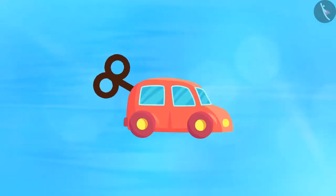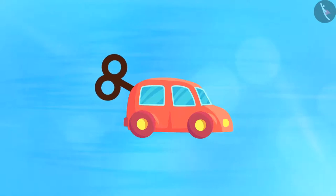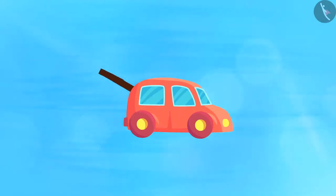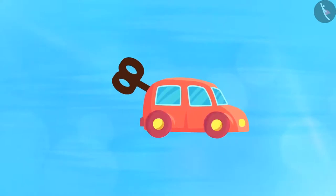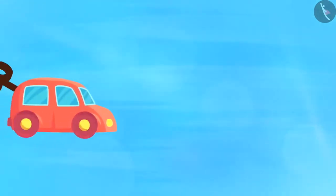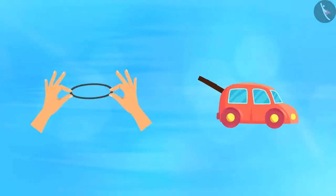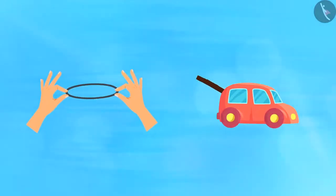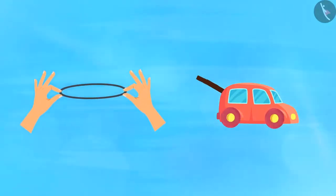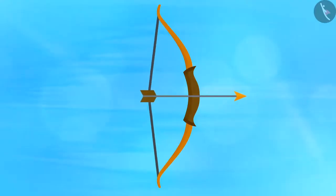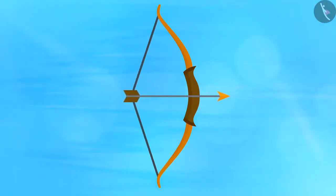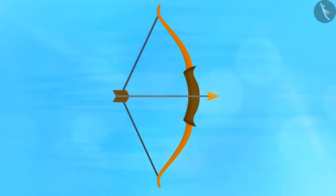Now take a toy car and wind it with its key, then place the car on the ground — you will notice that the car starts moving. From where does the car get the energy to move? In all of these instances the object stored the energy from the work done on them. When an object doesn't use the energy transferred to it to cause any change in its speed or velocity, it is stored by the object in the form of potential energy.